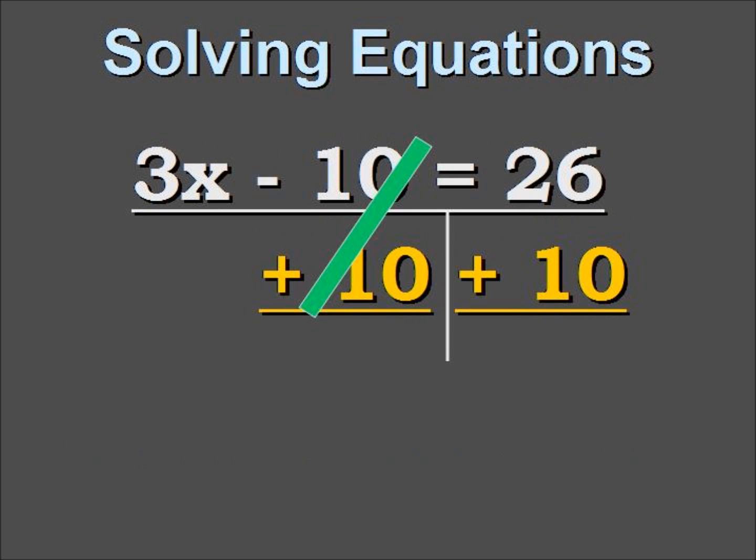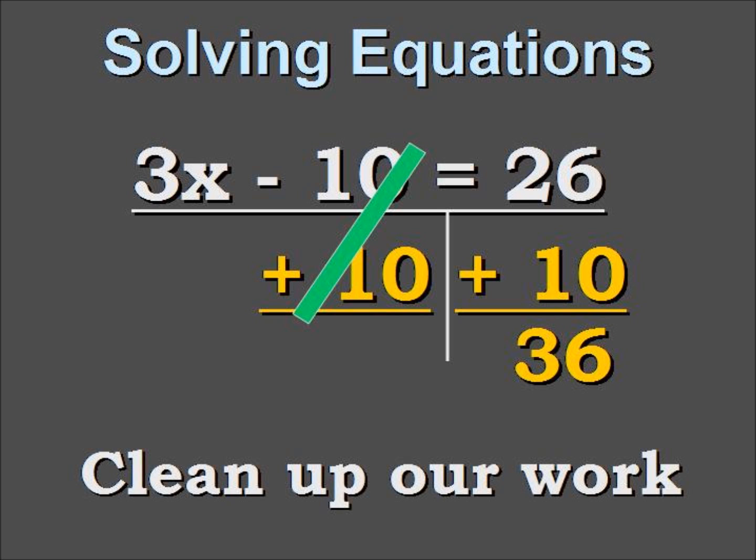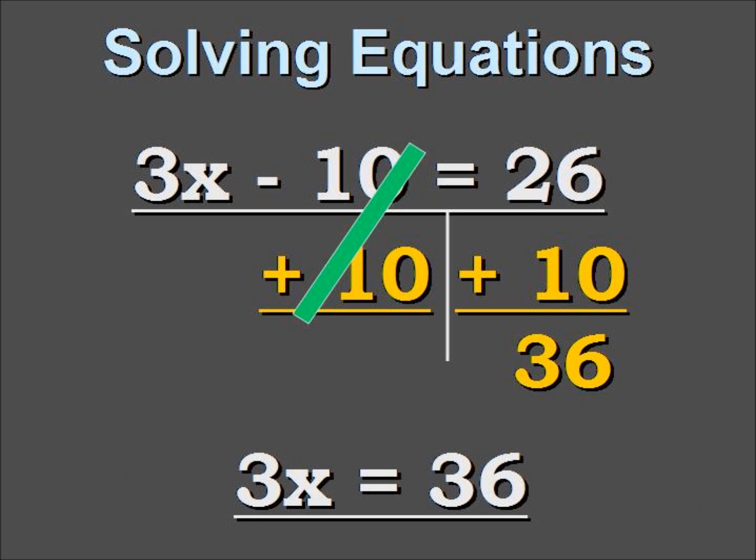One side cancels out. The other side gives us 36. Before we move on, we're going to clean up our work. So now we have 3x equals 36.